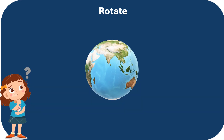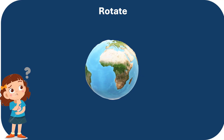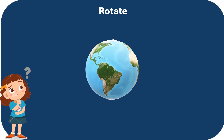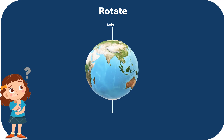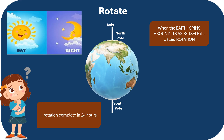Let's understand the concept of rotate or rotation. As we know, Earth is spinning — rotating around its axis. Axis is nothing but an imaginary line which is running from the North Pole of the Earth to the South Pole. When Earth spins around its axis, it is called rotation. And it takes 24 hours to complete one rotation, which causes the effect of a day and night.